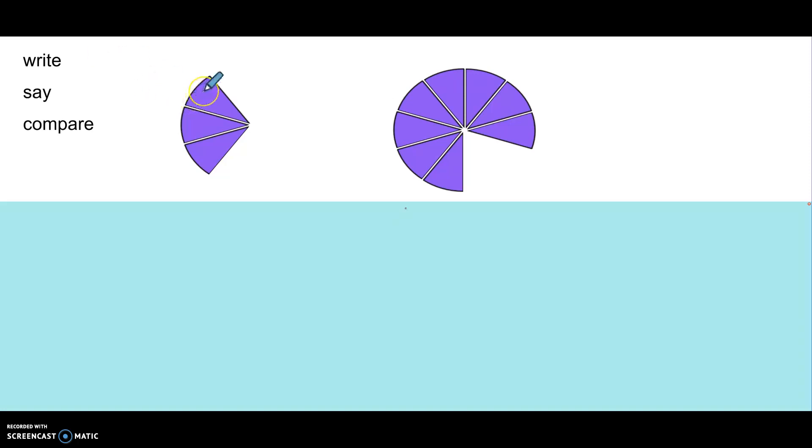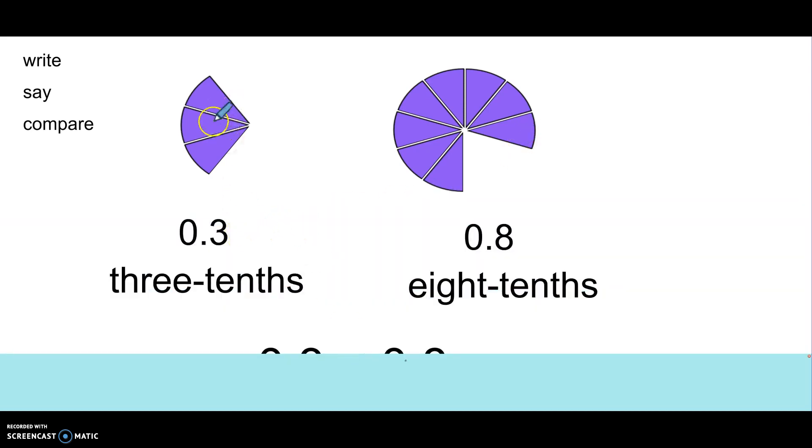So let's compare these fraction pieces. Here I have three out of my ten equal parts, and here I have one, two, three, four, five, six, seven, eight out of my ten equal parts. Let's compare them. This is three-tenths. Here it is written as a decimal. This is eight-tenths. Here it is written as a decimal. Comparing them, I can see that three-tenths is less than eight-tenths.